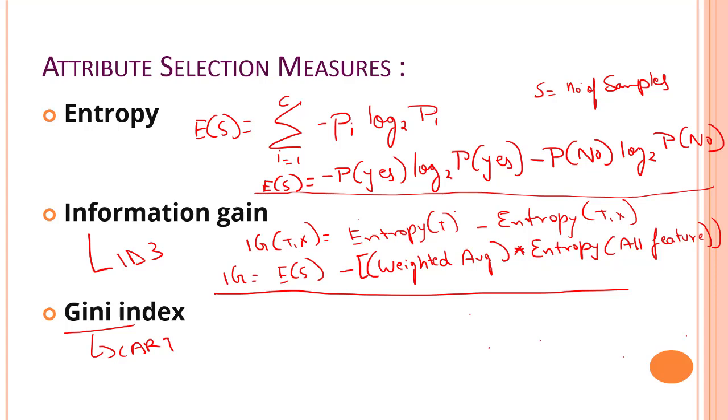Gini index can be calculated with the formula, let's write GI Gini index 1 minus summation of J, P of J square summation. This is the formula for Gini index.